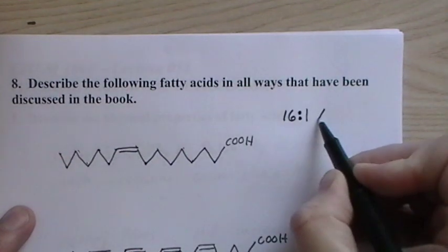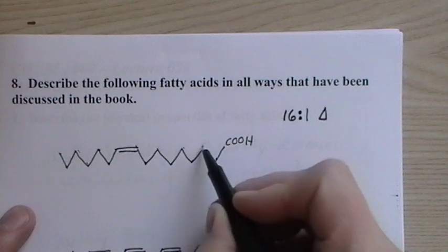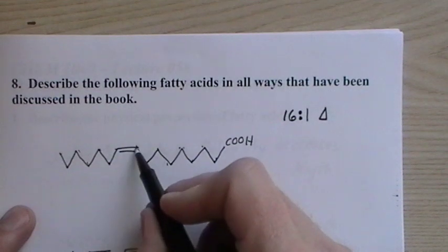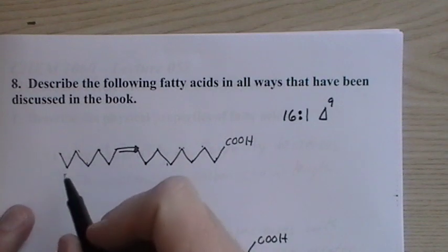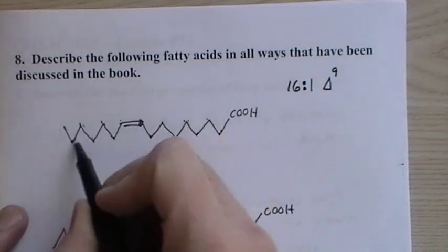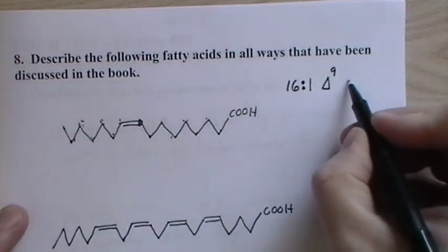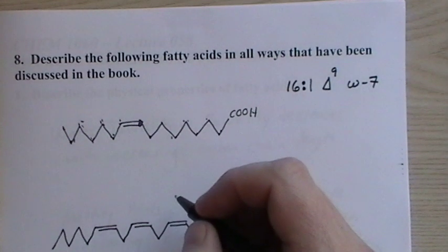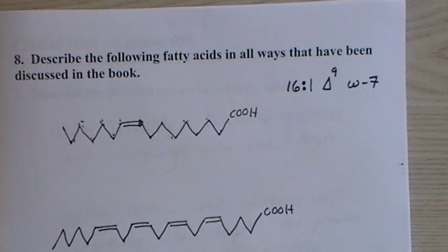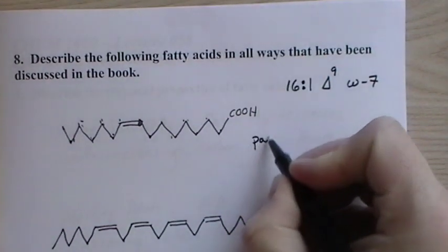We can also state where that double bond is from this side, and we use that with a capital delta. One, two, three, four, five, six, seven, eight, nine—it starts at carbon nine. Or we can number from the other side: one, two, three, four, five, six, seven—that's omega-7. And that's palmitoleic—I can't see it, I can't get my glass—palmitoleic acid. The writing here is unbelievably small.